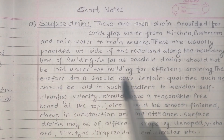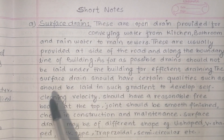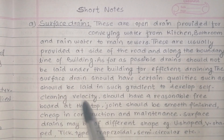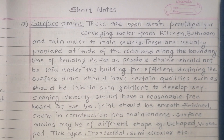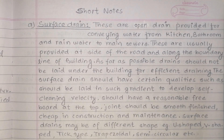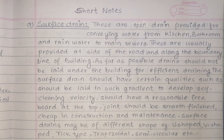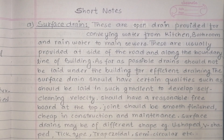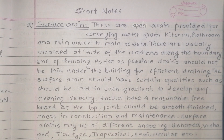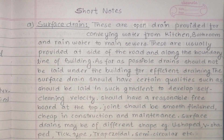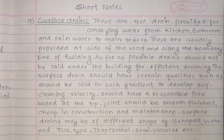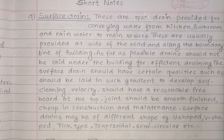The surface drain should have certain qualities. It should be laid in such a gradient as to develop self-cleaning velocity. We need to create a gradient from the top of the building, and the joints should be smooth.